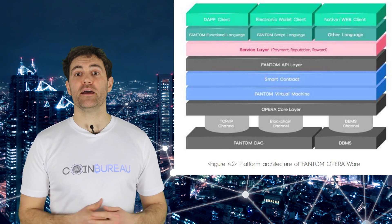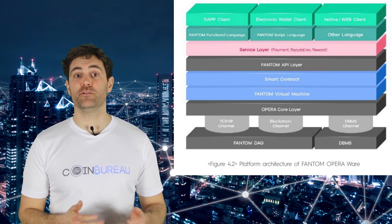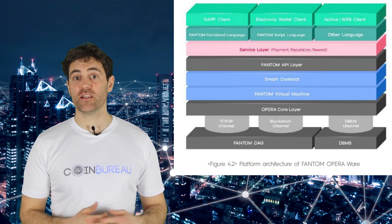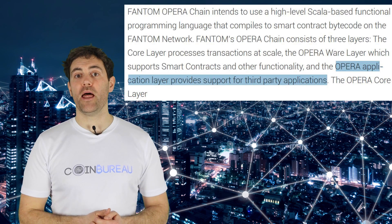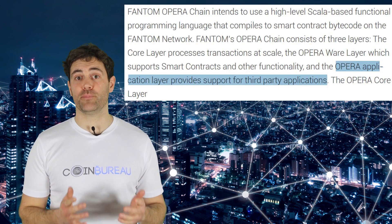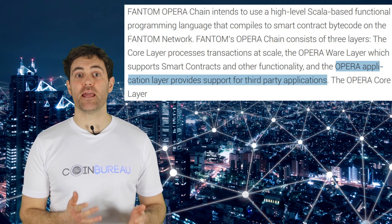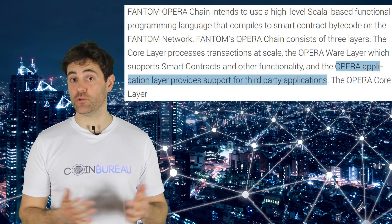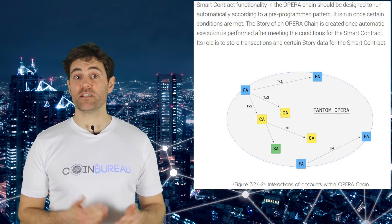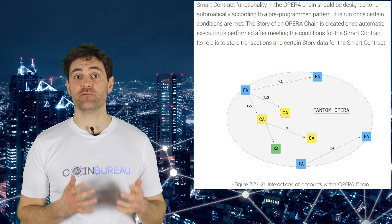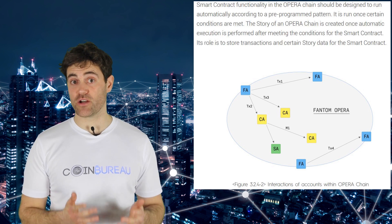The Opera Ware layer is the middle layer. Its responsibilities include issuing rewards and payments, managing smart contract scripts, and providing a functional programming language for developers. The top layer is the Opera Application layer, which stores the APIs accessible by the public. With access to these APIs, developers can give their decentralized apps — or dApps — a way to interact with the Opera Ware layer. On the Fantom platform, when a smart contract or transaction is executed, a small piece of information called "story data" is retained, which Fantom uses to keep track of past transactions.